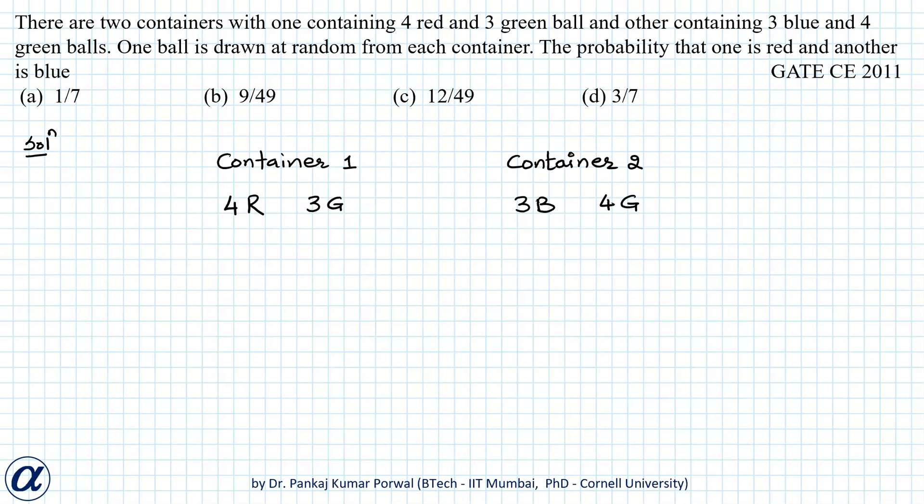In this question we are given that there are two containers. One container contains four red and three green balls, and another container contains three blue and four green balls. One ball is drawn at random from each container, and we want to find the probability that one of the balls is red and another is blue.